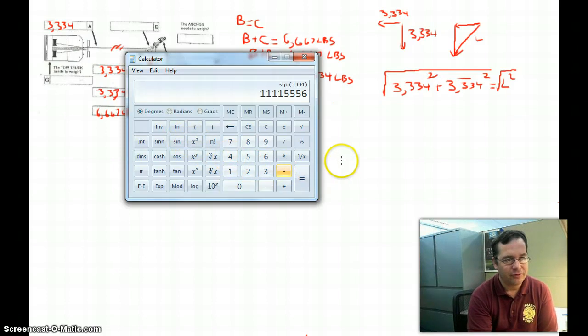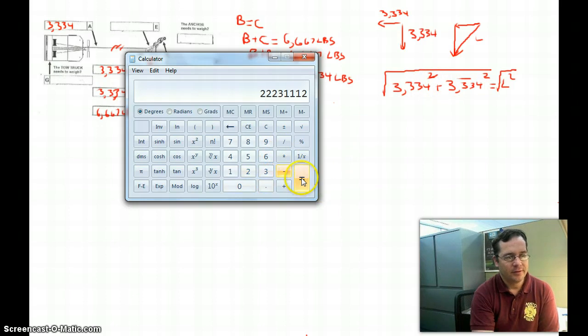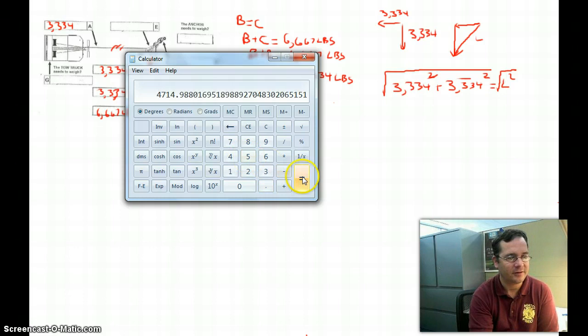So a really huge number. And you'll notice these two numbers are the same, so I'm just going to multiply that by 2. That is the square of the length of side L. So how do we get the length of side L? We just take the square root. I'm going to raise this to the 1 half power. That's equivalent to taking the square root. And we see that the force is 4,715 pounds.